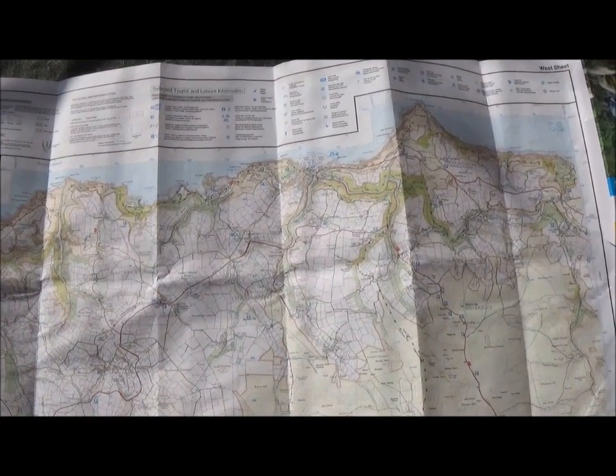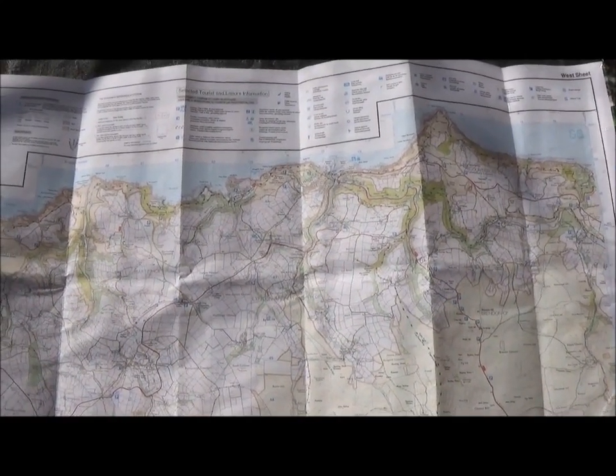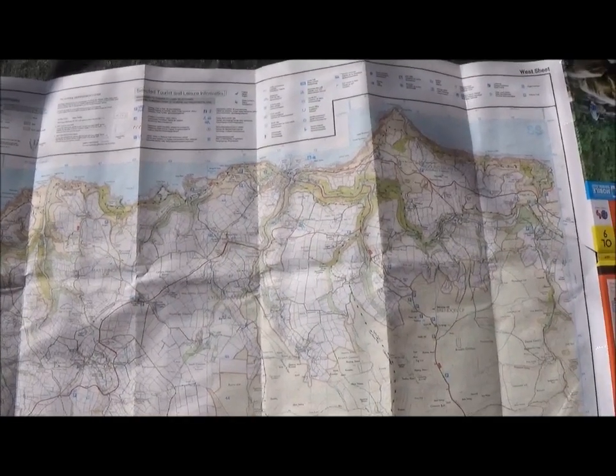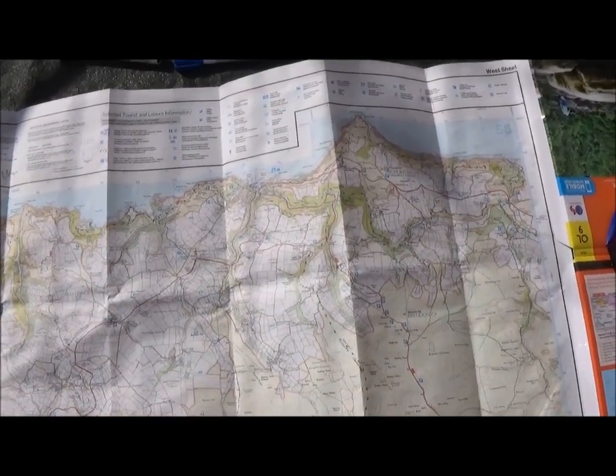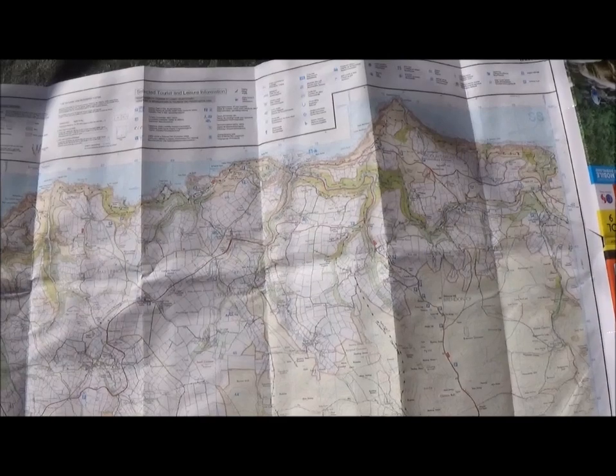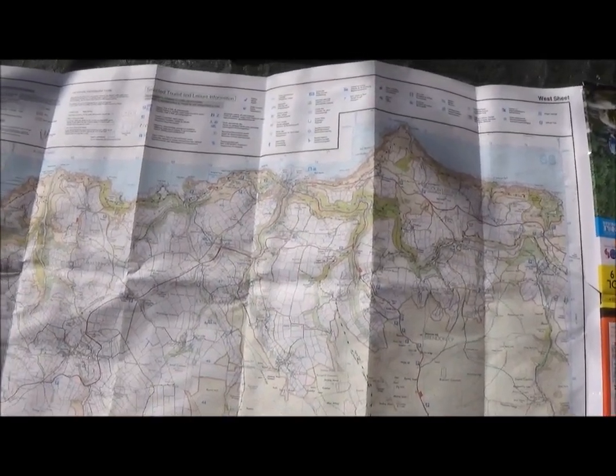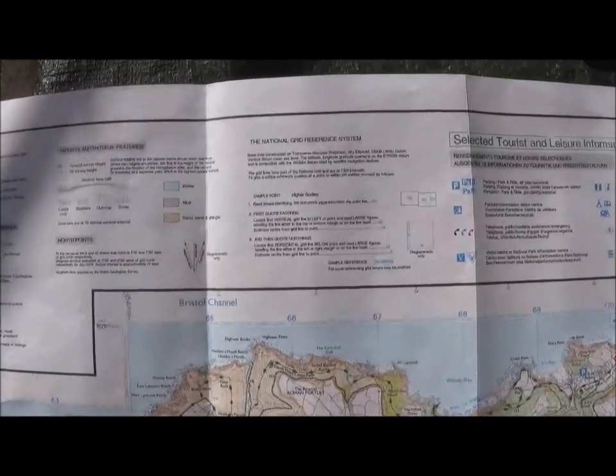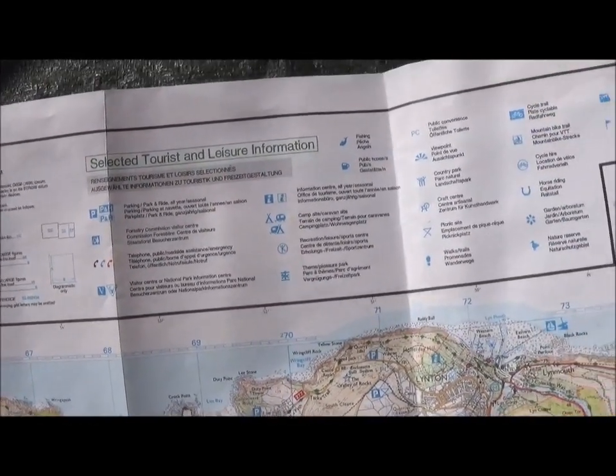So today we're going to learn a bit of basic map reading. We're going to start with a grid reference. But before we do that, if you've got a map, I would like you to look at the key. The key will be either on the side of the map or along the top. Mine's along the top. And that will tell you what all the different map symbols will mean.